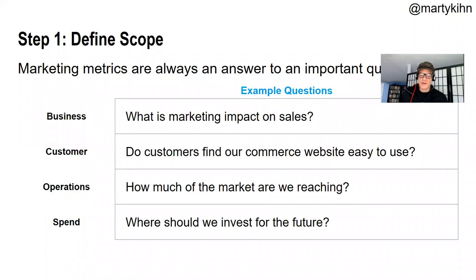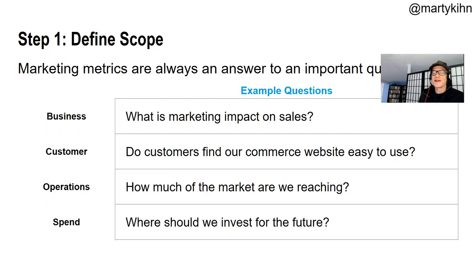Let's get specific now into how to design a dashboard. Step one: define the scope. Marketing metrics are always an answer to a question. If you don't know what the KPI should be, just ask yourself what question you're trying to answer — and make it specific. The question should never be something vague like 'what should I do?' — that's an existential cry for help. It really should be something like: what is marketing's impact on sales? Do our customers find our commerce website easy to use? These questions point to numbers that can be visualized.